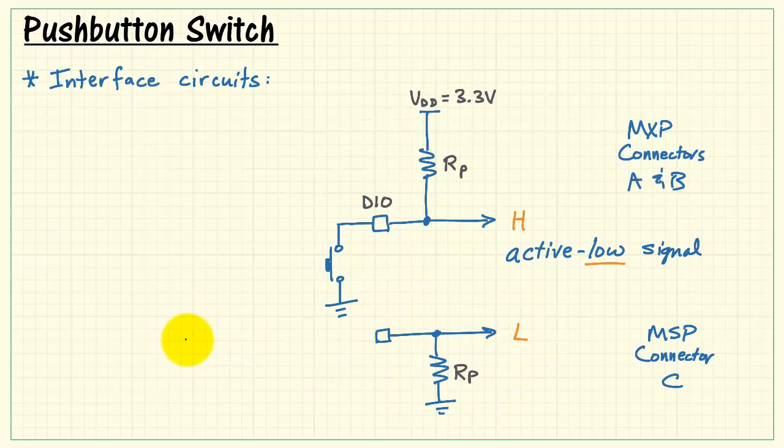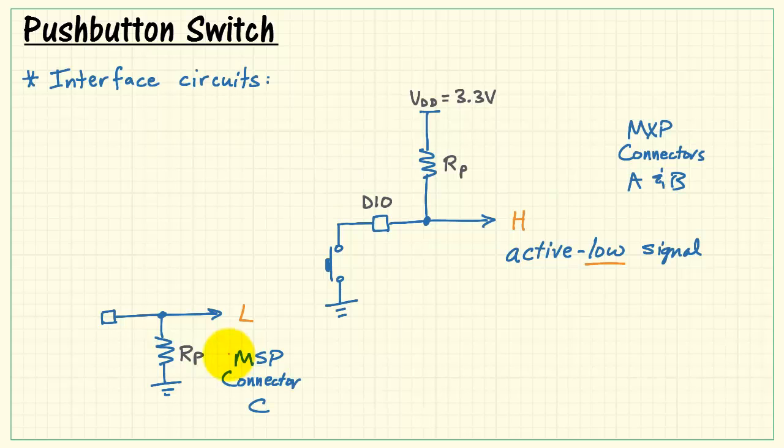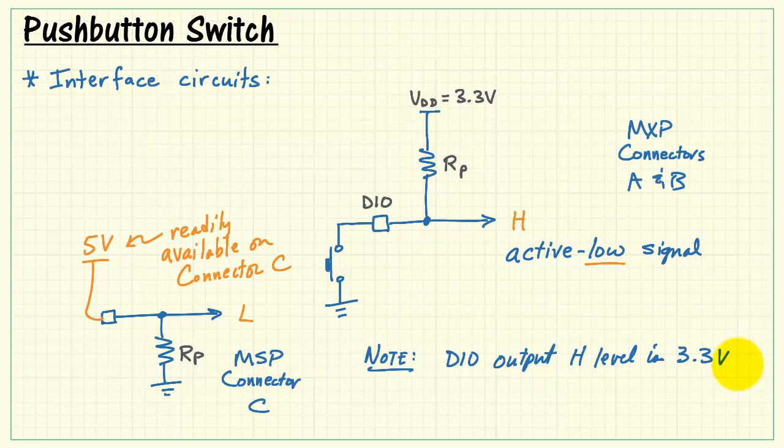In a similar fashion, we connect the push-button switch to the DIO on the MSP connector, but since it's nominally low with nothing connected, we have to connect DIO to 5 volts to override that pull-down. I'm using 5 volts because it's readily available on Connector C. You could also use 3.3 volts supply if you wanted. All of the DIOs have an output high level of 3.3 volts.